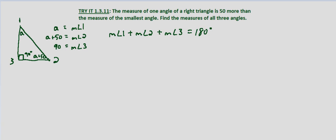So the measure of angle 1 we know is A. Measure of angle 2 is A plus 50, and then the measure of angle 3, since it's a right triangle is 90. We know that equals 180.